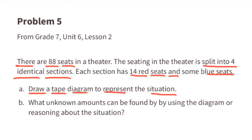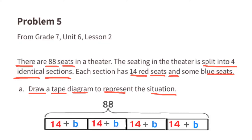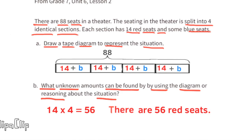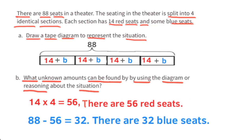Problem number five from 7th grade Unit 6 Lesson 2: there are 88 seats in the theater, split into four identical sections. Each section has 14 red seats and some blue seats. Part a — draw a tape diagram to represent the situation. This tape diagram shows 88 seats in total, split into four identical sections, each with 14 red seats and an unknown number of blue seats. Part b — 14 red seats times 4 sections equals 56 red seats total. 88 minus 56 equals 32 blue seats.